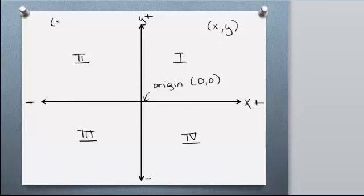If you wanted to graph the point (-2, 4), you would go in the left direction on x for the negative 2 and then up 4. So here's negative 2, 4. This would be the point (-2, 4).